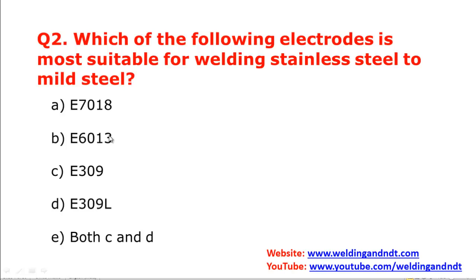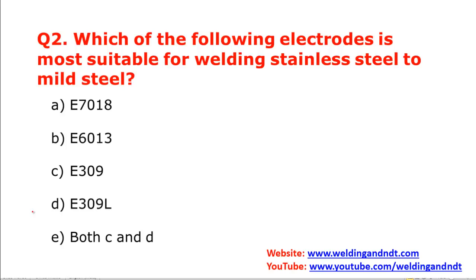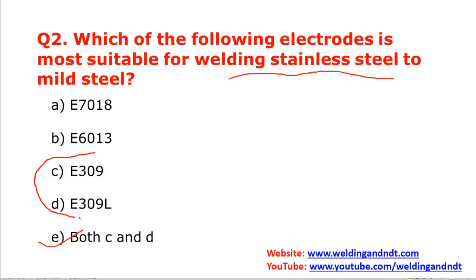Question number two: which of the following electrodes is most suitable for welding stainless steel to mild steel — that is SS to MS? Option A is 7018, option B is 6013, option C is 309, option D is 309L, and option E is both C and D. The correct answer is both C and D — that is E309 and E309L. Both electrodes can be used to weld stainless steel to mild steel.